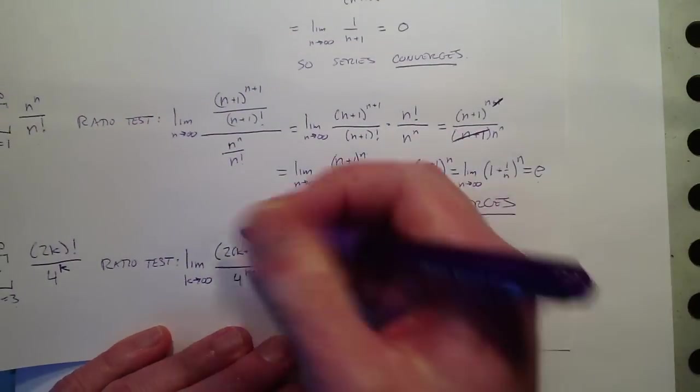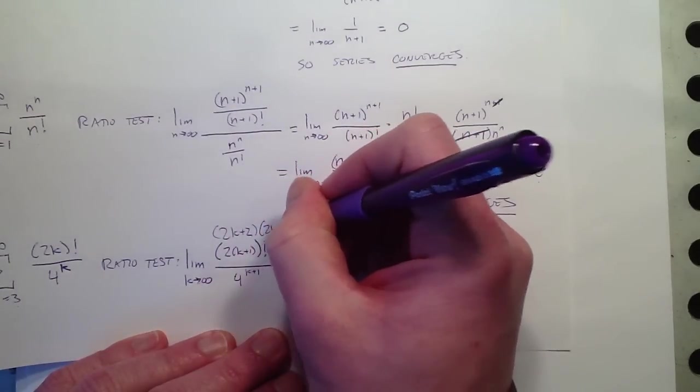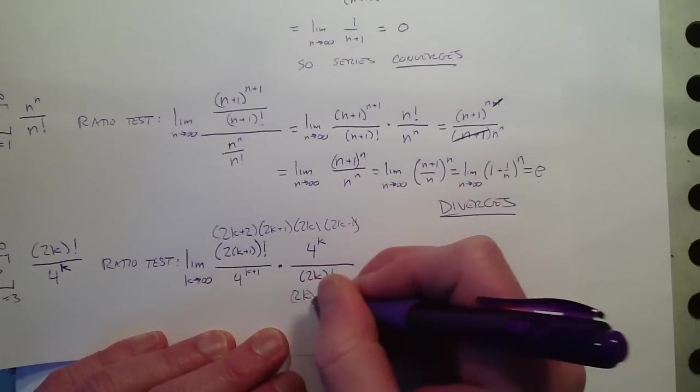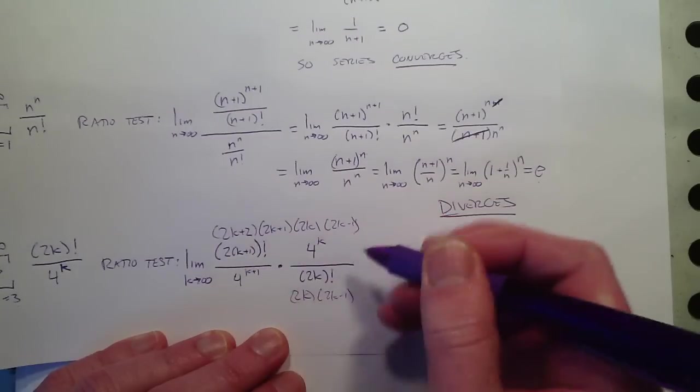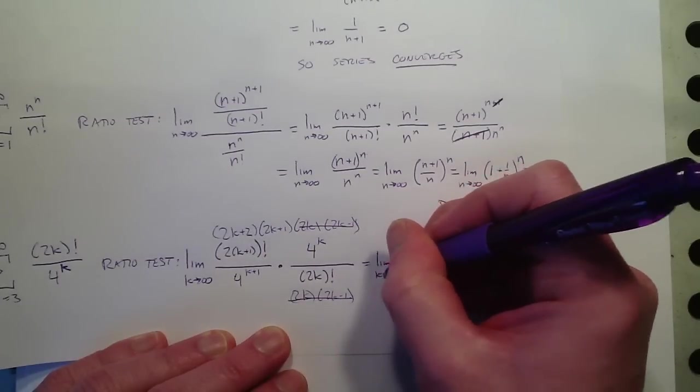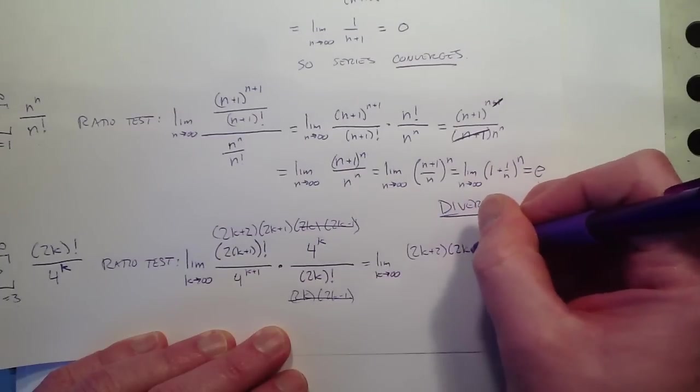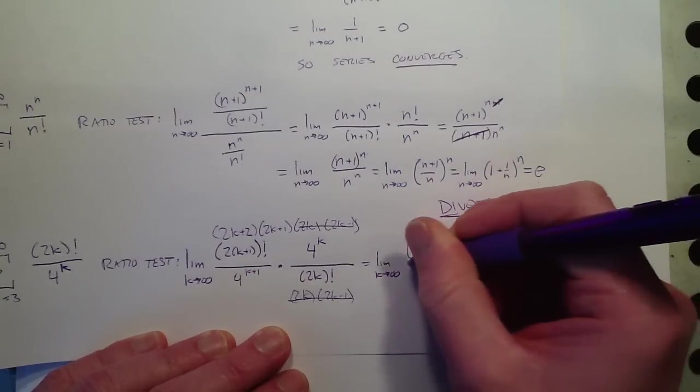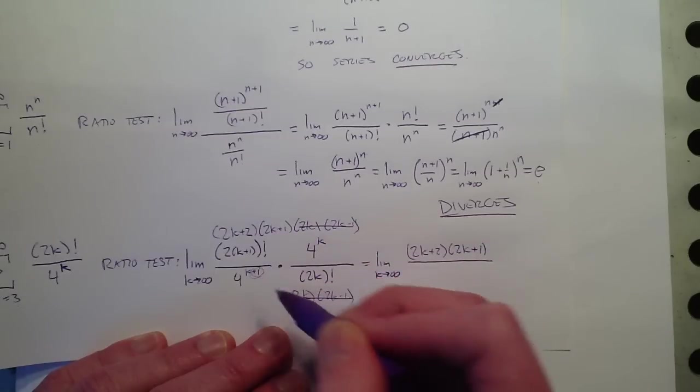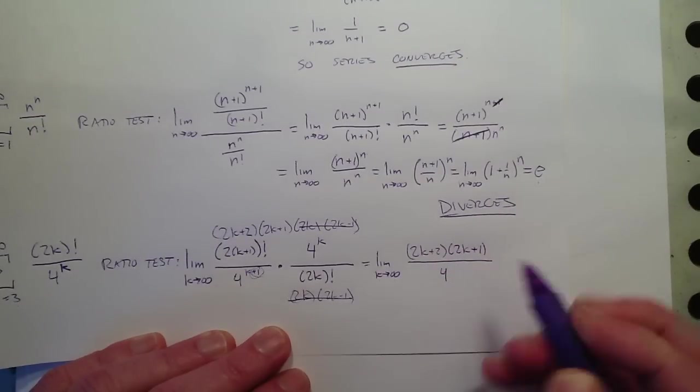And I'm going to do some canceling this is 2k plus 2 ok so 2k plus 2 factorial is 2k plus 2 times 2k plus 1 times 2k times 2k minus 1 et cetera et cetera and 2k is 2k times 2k minus 1 so notice here that because of that 2 all these cancel out but there's actually two terms left in the factorial here so that's equal to the limit k approaches infinity of 2k plus 2 times 2k plus 1 all over 4 to the k plus 1 over 4 to the k well this all the k's sorry all the 4's cancel out except the 1 extra 1 here that's over 4.